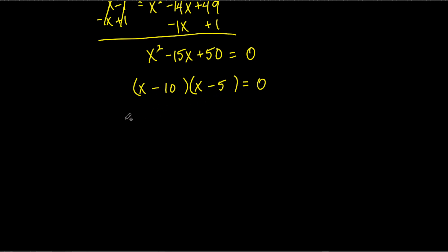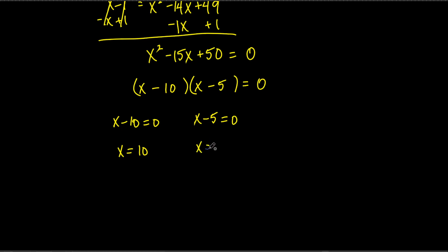We set both factors equal to 0: x minus 10 equals 0, and x minus 5 equals 0. Solving: x equals 10 and x equals 5. It looks like we're finished and can circle both — but you can't. You must check. Because at the beginning we squared both sides, and remember I said weird things happen.